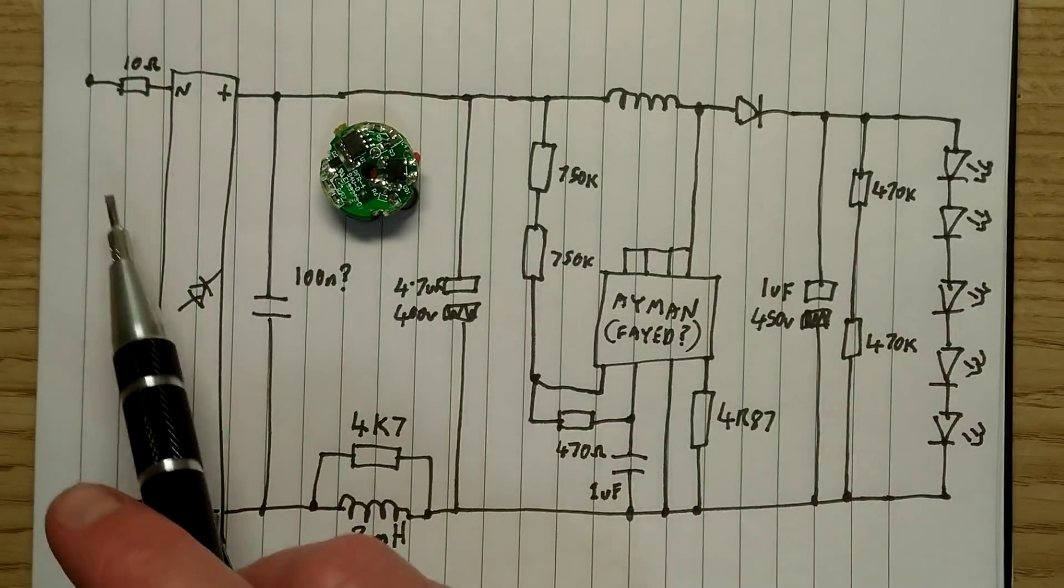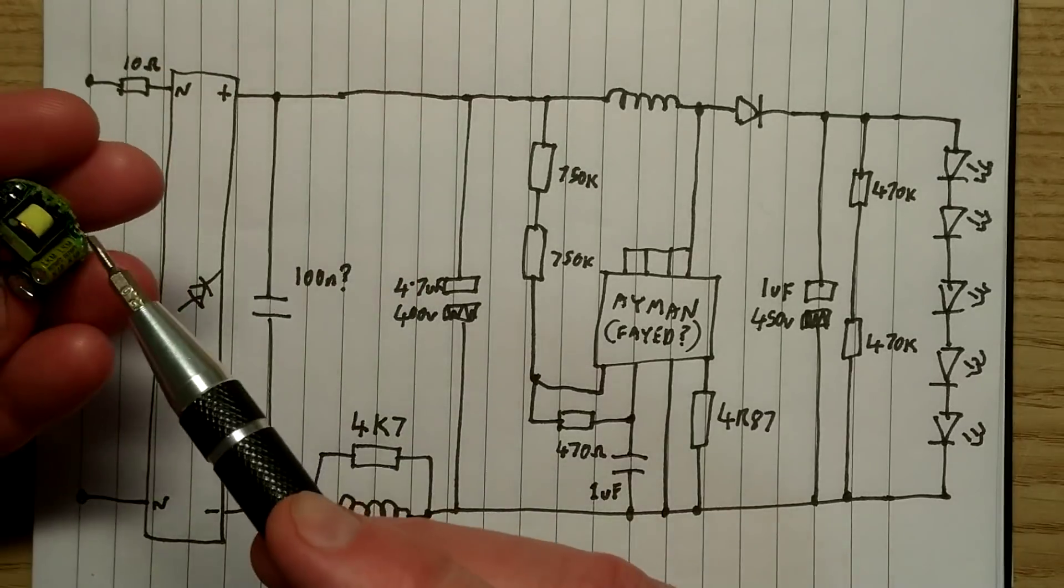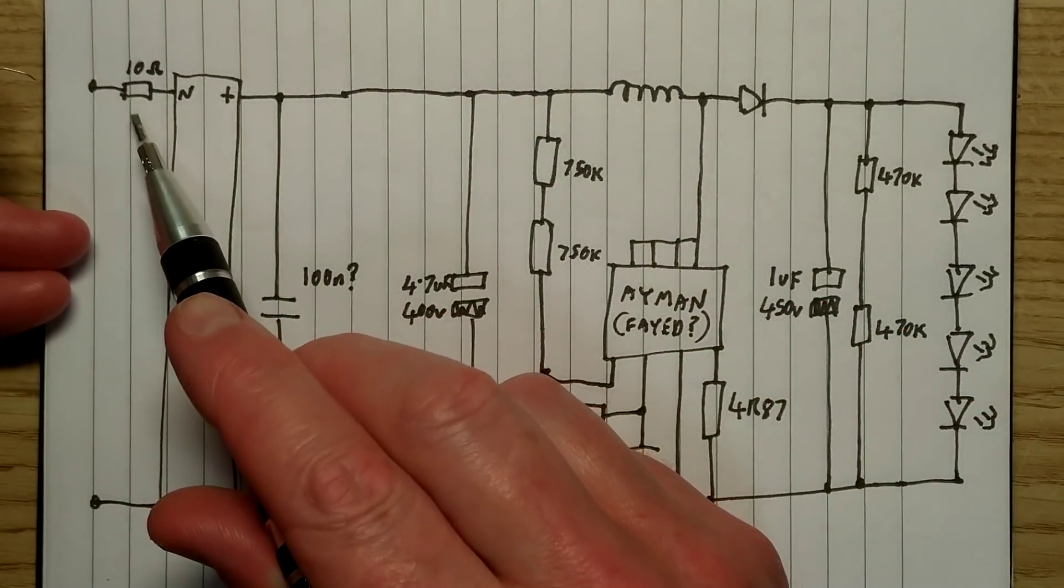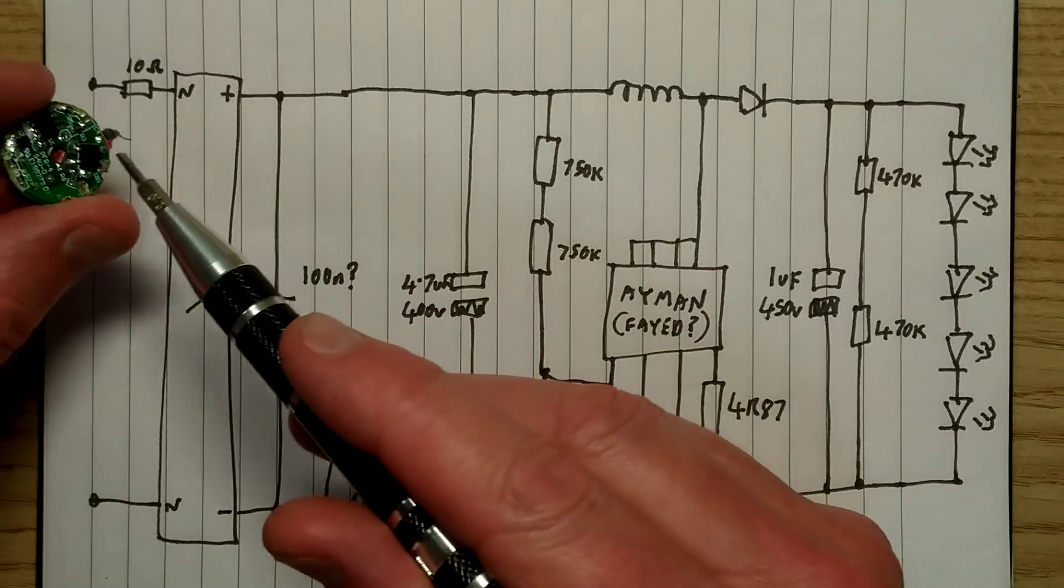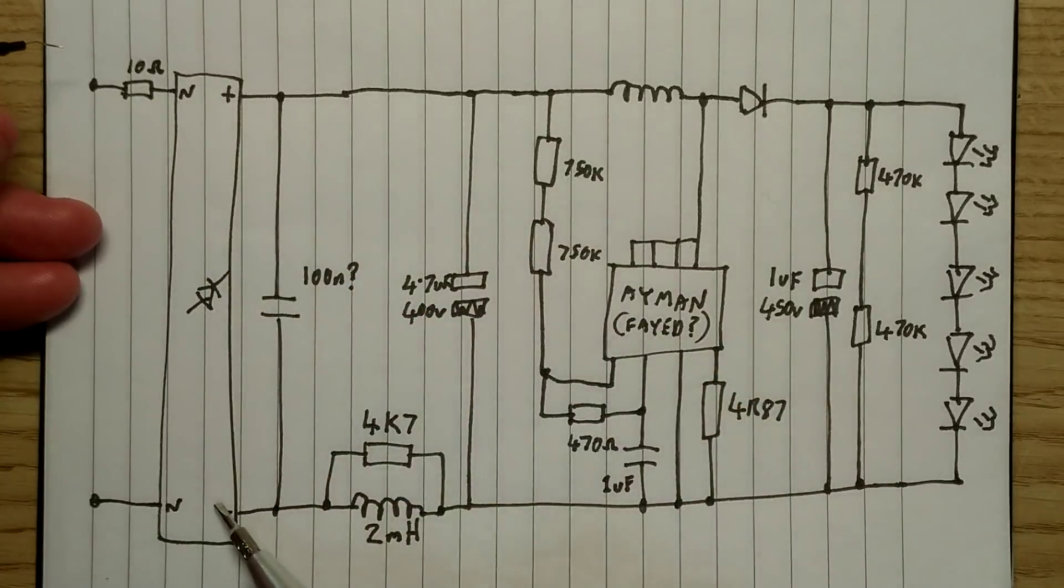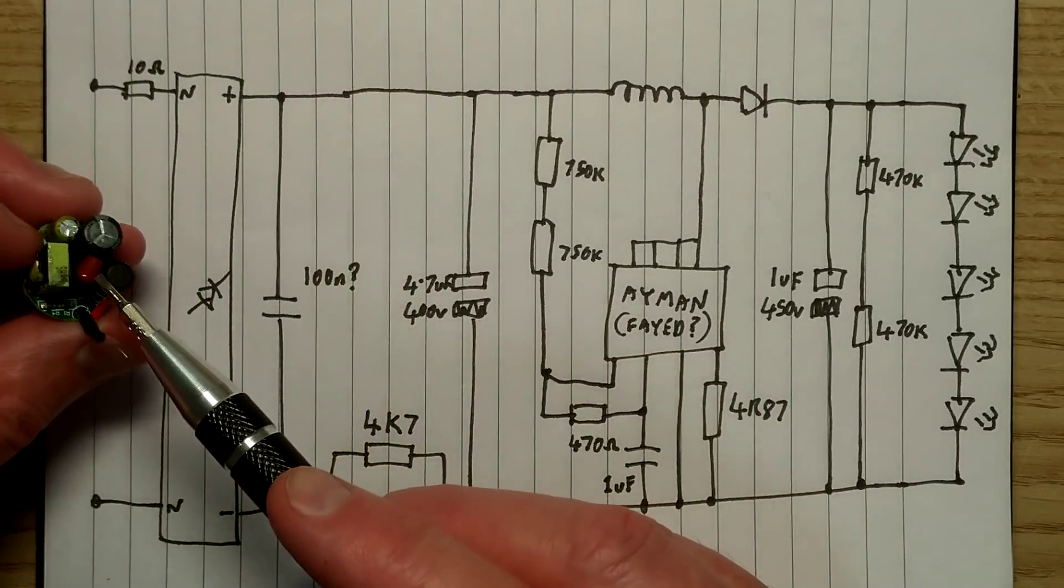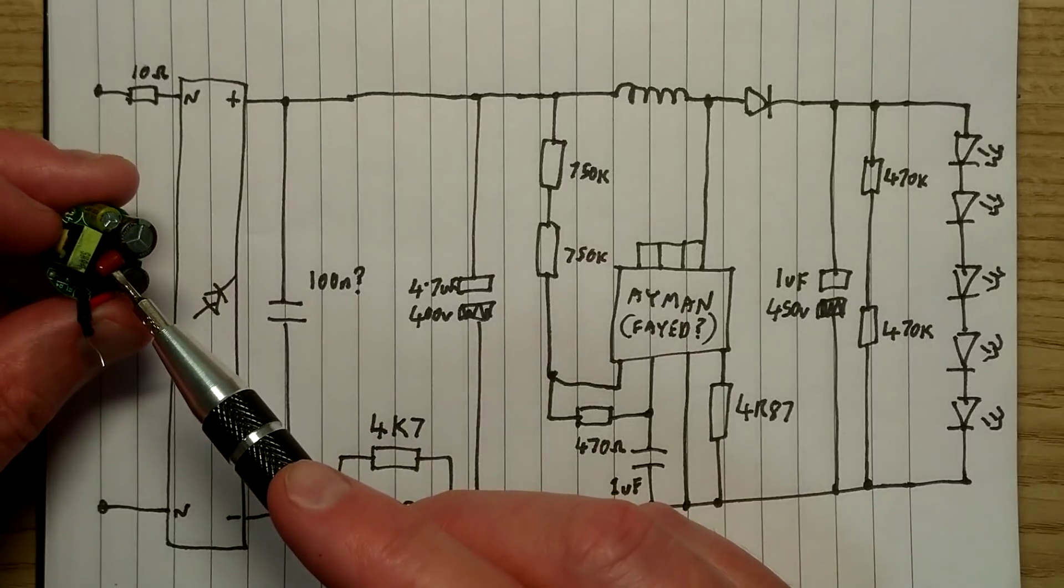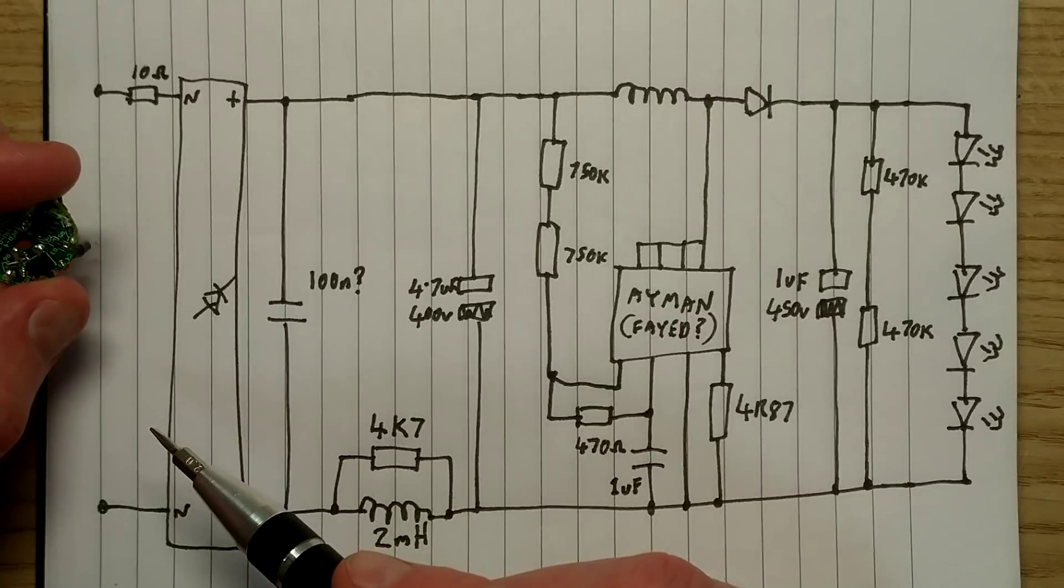So let's take a look at the circuit from the beginning. The incoming supply comes in and goes through a 10 ohm resistor under sleeving, which is doing two things. It's limiting inrush current and it's also acting as a fuse, probably. And it goes into this bridge rectifier here. Then there's a suppression capacitor, this red one here, 100 nanofarad.